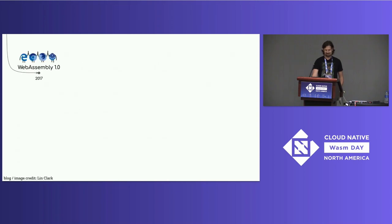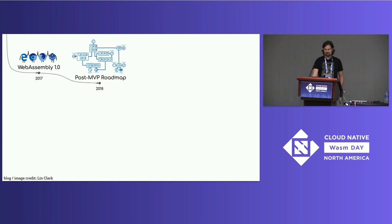Our path starts in 2017 with the release in four browsers of WebAssembly 1.0. We called it the MVP, short for Minimum Viable Product, because there was still a lot of work left to do — it was definitely minimal. We collected a lot of the remaining features to be done and published a post-MVP roadmap. Lynn Clark made a really cool video game-like skill tree diagram showing how different features unlock different use cases.